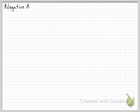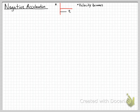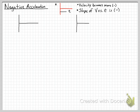Now let's talk about negative acceleration. Negative acceleration means we have a line in the negative quadrant of the acceleration versus time graph, and basically velocity becomes more negative. The slope of a velocity versus time graph is also going to be negative. So let's represent those — we're going to draw two graphs of velocity versus time.